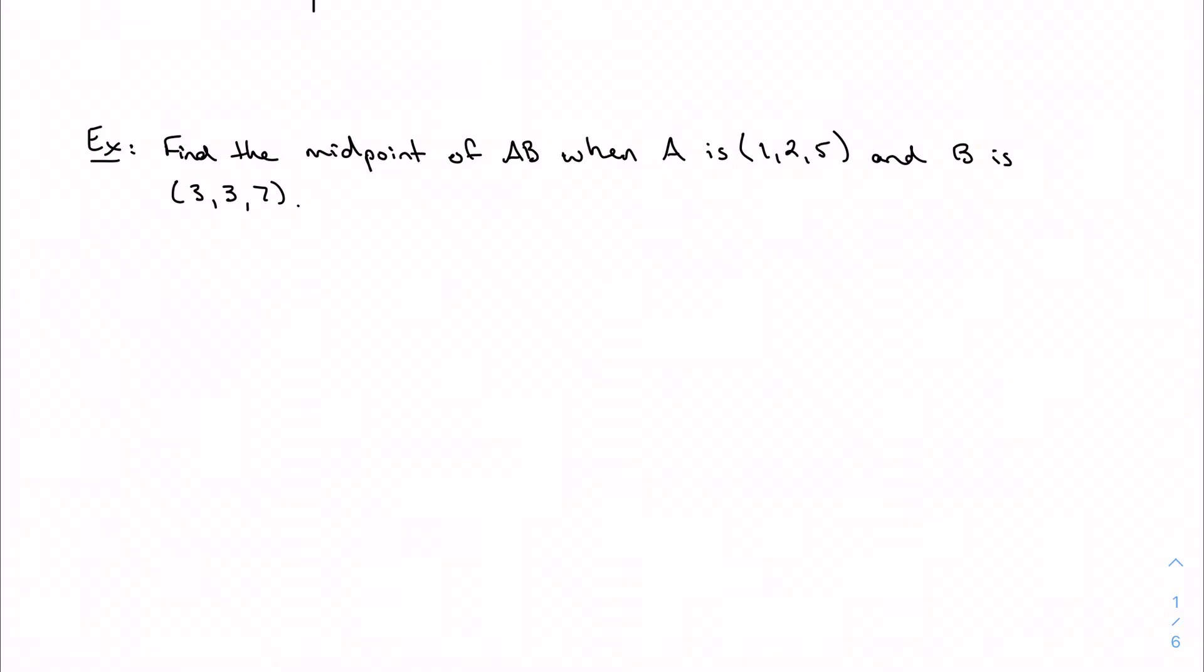So here's one really quick example. Find the midpoint and actually we're going to do the distance too, the length of AB, when A is (1, 2, 5) and B is (3, 3, 7).